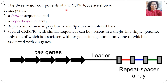Let us look at the structure of CRISPR. The CRISPR locus has three main components: the Cas genes, a leader sequence, and a repeat-spacer array. The repeat-spacer array is arranged in sequence — first there is a repeat palindromic sequence, then a spacer, then again a palindromic sequence, then again a spacer.